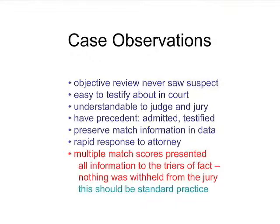What did we learn from the case? This was an objective review that never saw the suspect. It was easy to testify about in court. One of the reasons it was easy is we always had genotypes — we could point to the genotypes, show the data. The concepts of information gain and of how much data goes in and how much information comes out was quite understandable to the judge and the jury. This was not a sophisticated Manhattan jury — the jury was located an hour and a half outside of Pittsburgh.